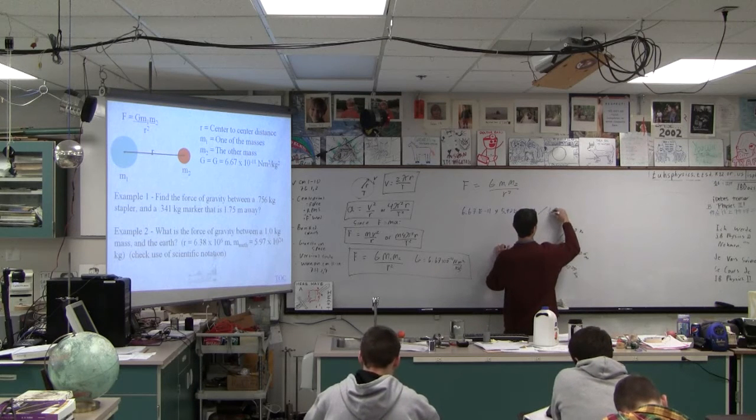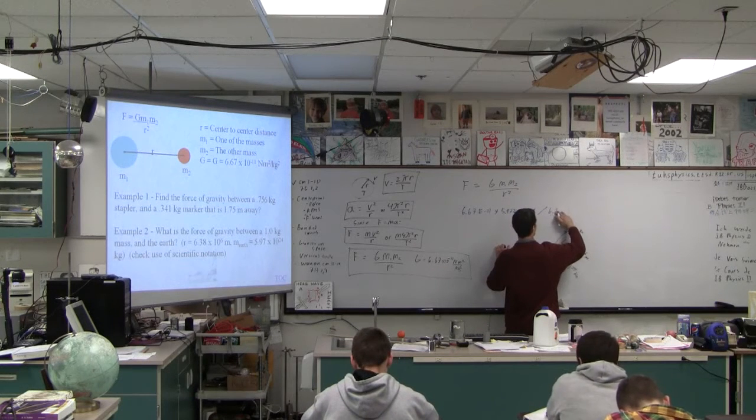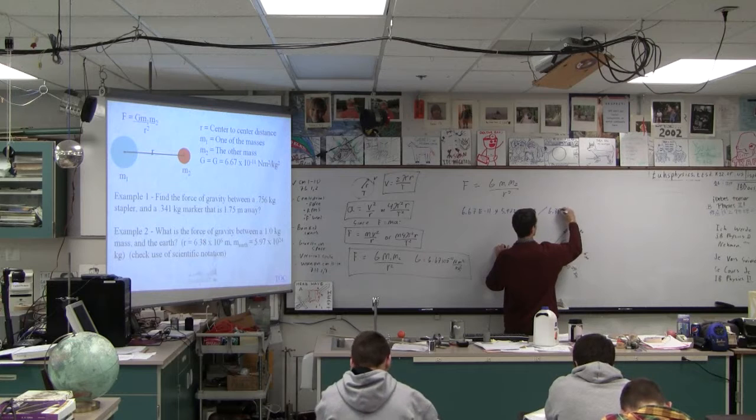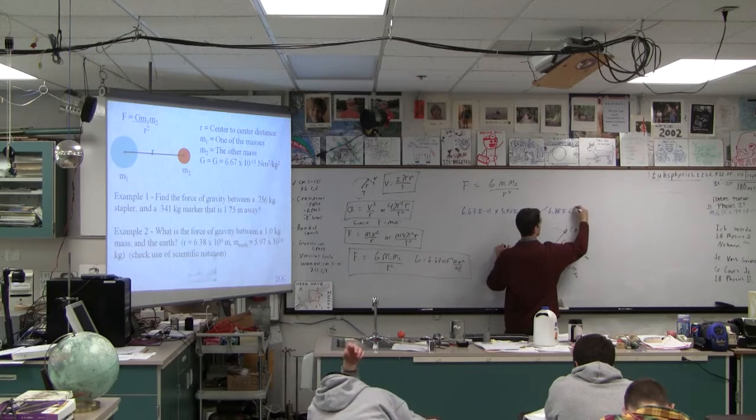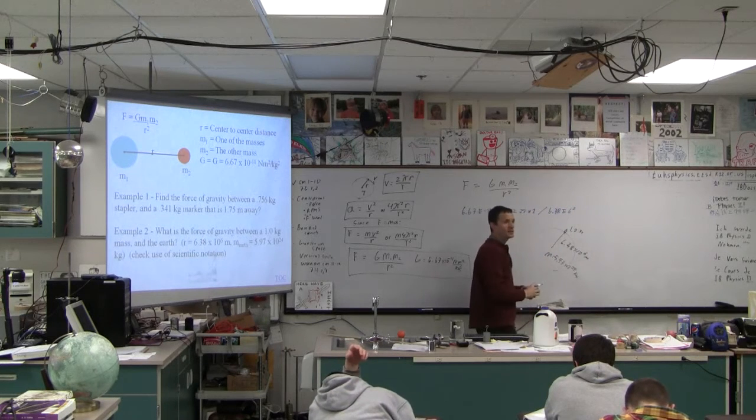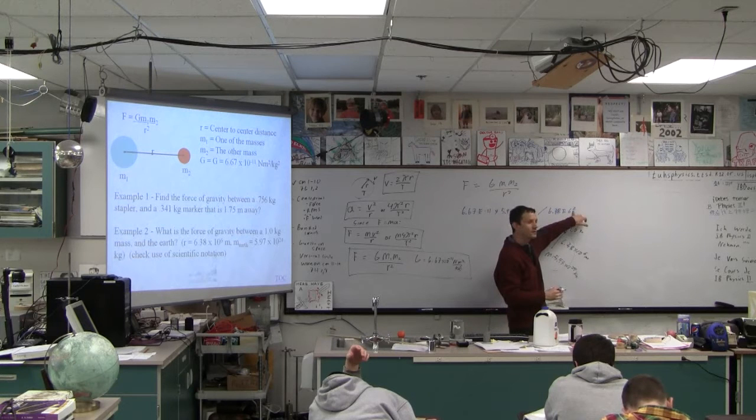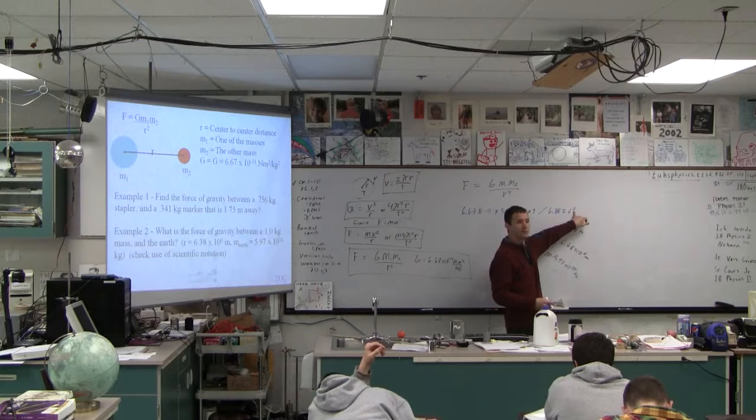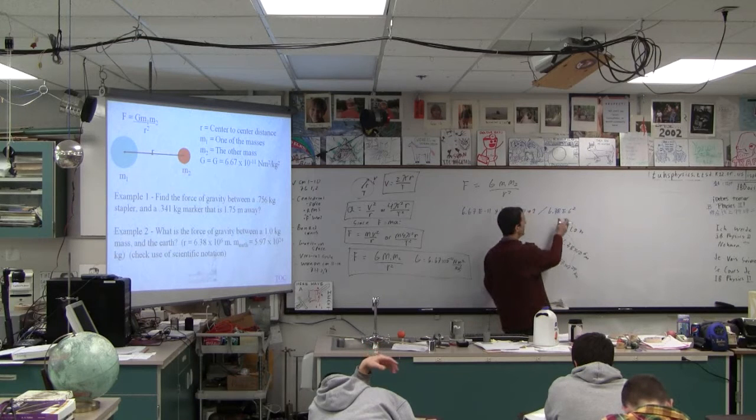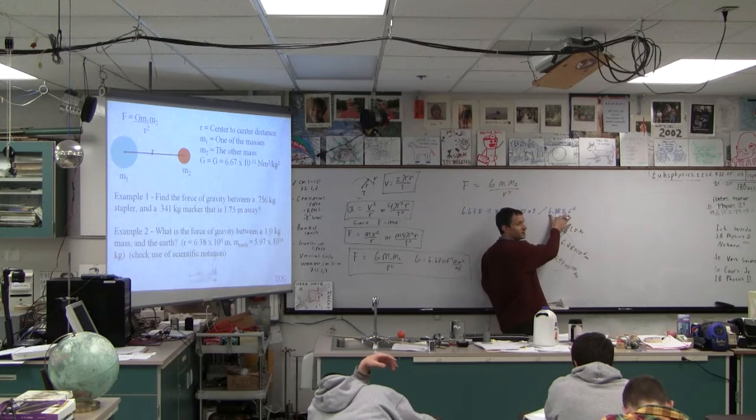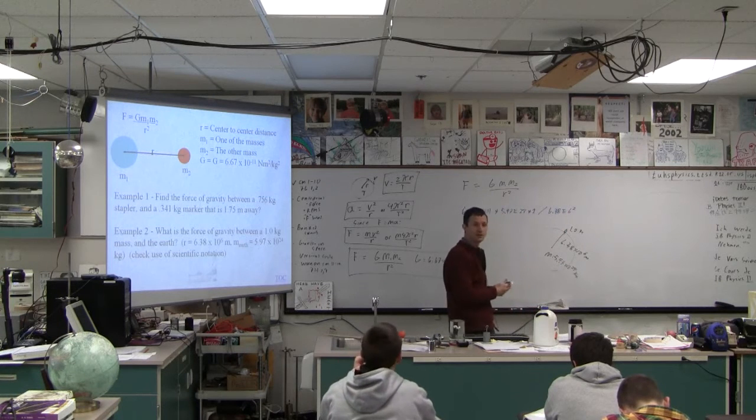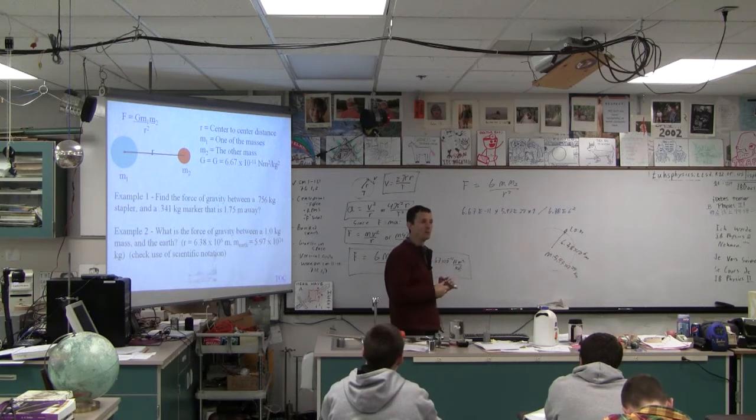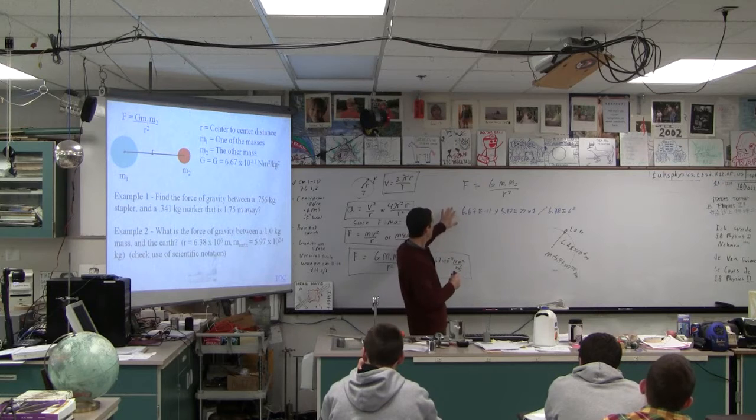Divided by 6.38 E6 squared. Now, can I safely square that without parentheses? You think you can't, but you can. You can square that without parentheses because the order of operations evaluates scientific notation first. That's all one number. So that is all you have to type.